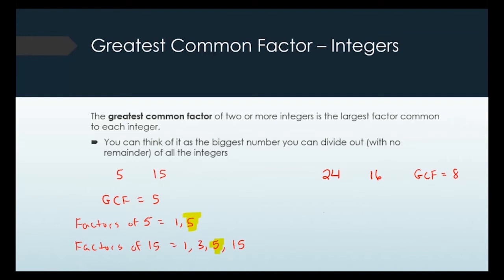The last example here is 17 and 30. 17 is a prime number, meaning the only things that divide evenly into it are 1 and 17. Since 1 divides into 30 but 17 does not, the greatest common factor is 1 — the only thing we can divide out of both numbers.